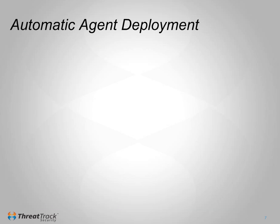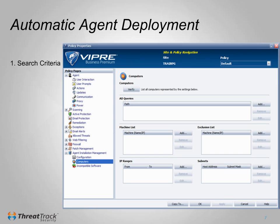Automatic agent deployment consists of configuring Viper to search for machines without the Viper agent installed, and automatically install the agent on them. It's a three-step process to configure. First, the search criteria must be configured at the policy level. Here we see the form for setting up the criteria, such as scan IP ranges and subnets, and look in specific AD groups. Be careful when adding IP ranges so they are not too broad, or they will take a very long time to scan.